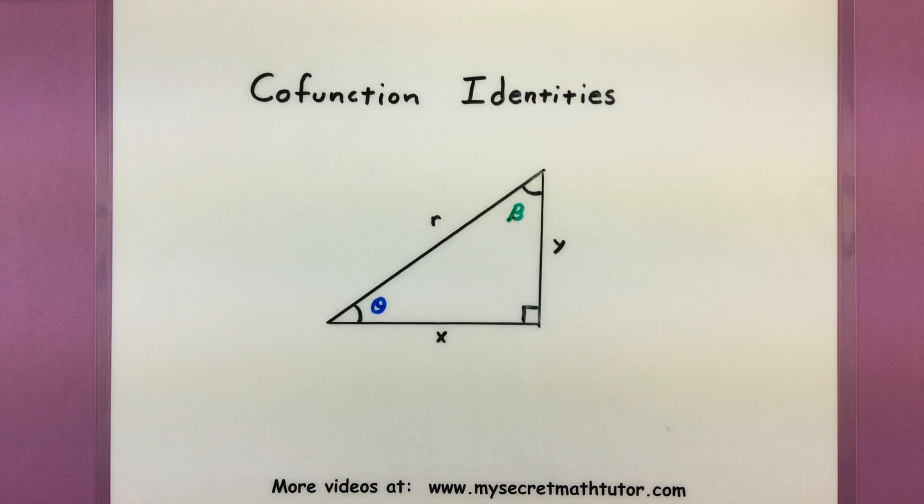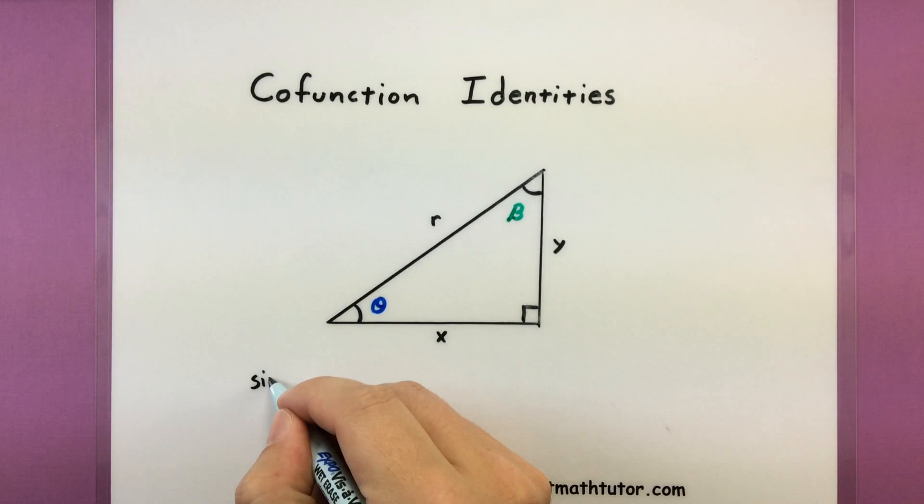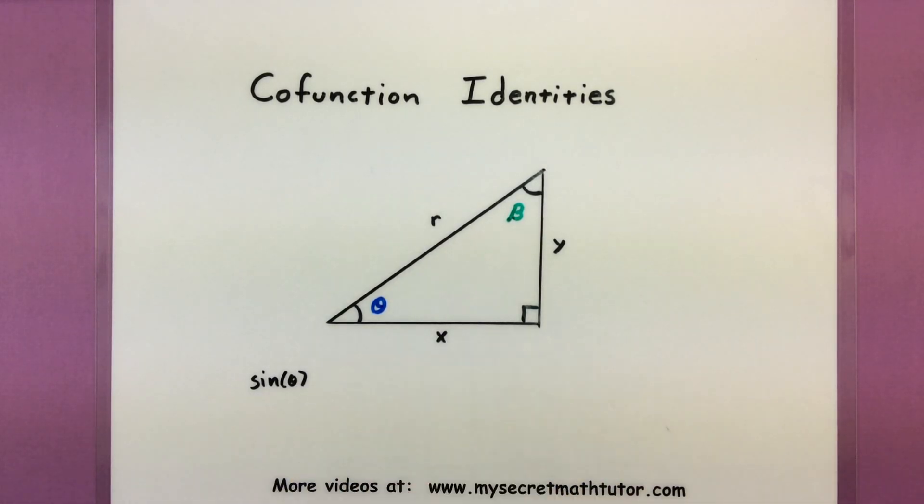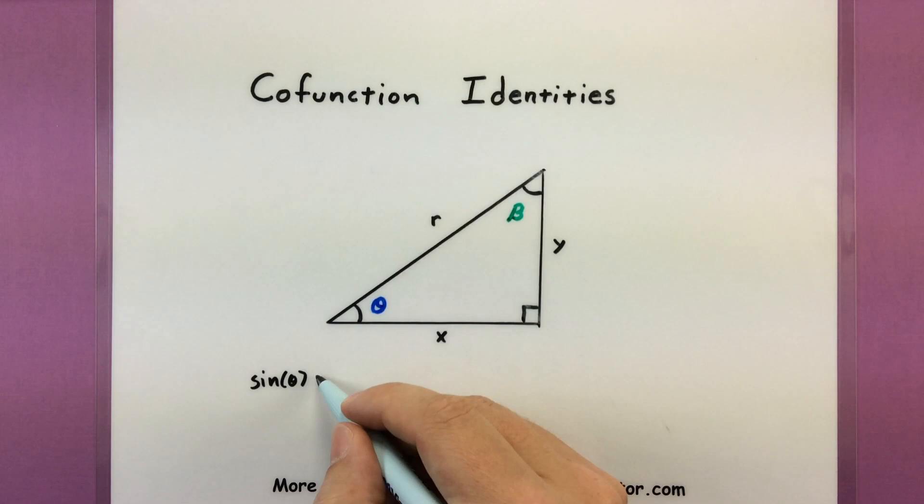So let's first explain about some neat relationships that we have in a right triangle. Suppose you're looking at this particular right triangle and you need to find something like sine of theta. Now using what you know about sine, you can find that value by taking the opposite side and putting it over the hypotenuse. So in this case you would get y over r.